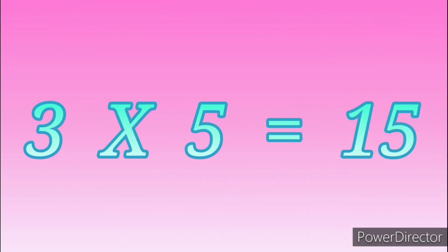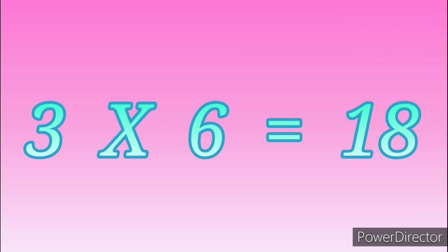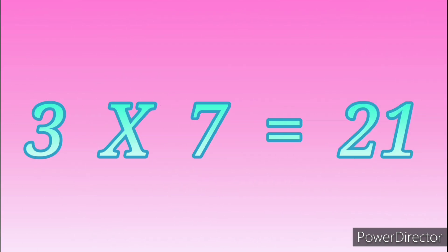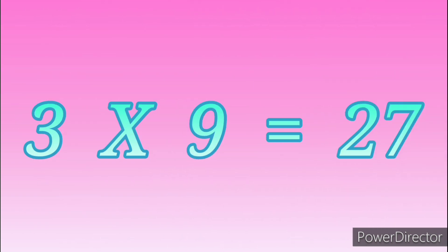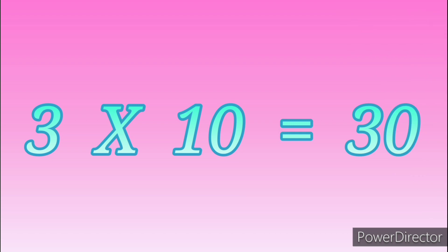Three fives are fifteen. Three sixes are eighteen. Three sevens are twenty-one. Three eights are twenty-four. Three nines are twenty-seven. Three tens are thirty.